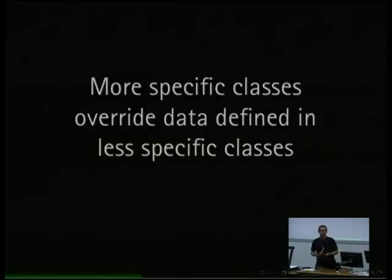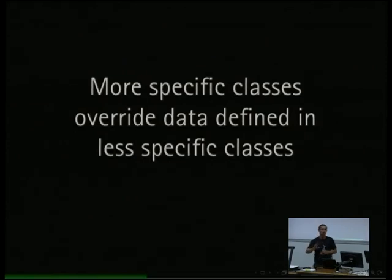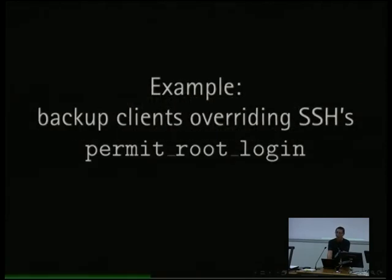Here's the most important concept: whatever you define in a more specific class gets to override whatever you specify in a less specific class. All of my nodes that inherit from 'common' — a very non-specific class — have a default NTP server, but the definition of one specific node is very specific and therefore gets to override. There's multiple inheritance, and it's actually encouraged because it is in well-defined order.